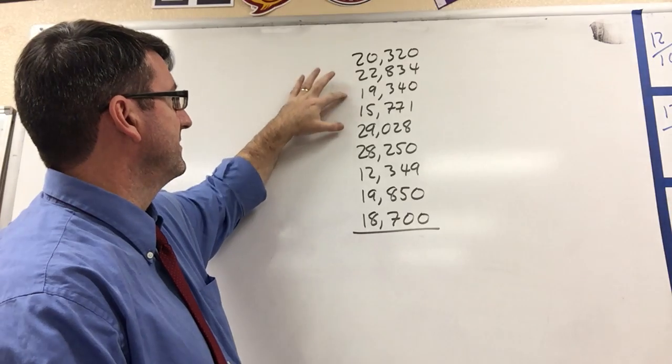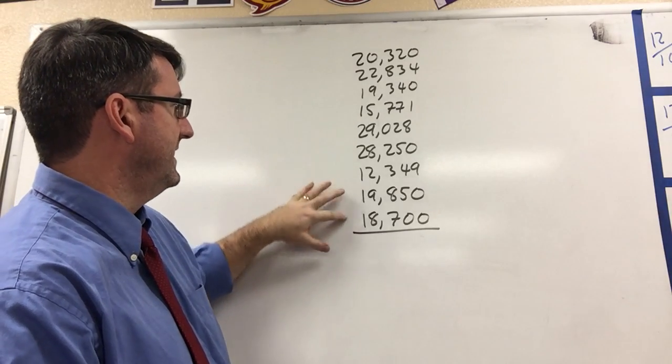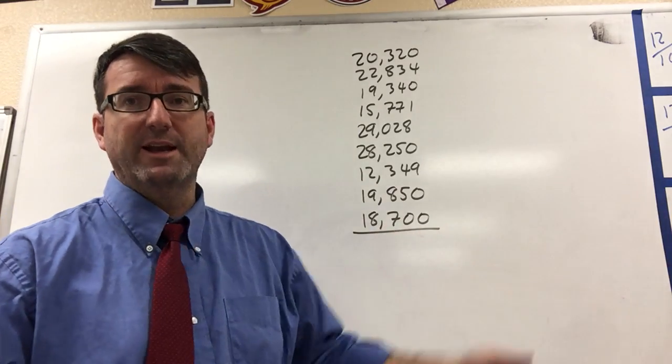So here we've got one, two, three, four, five, six, seven, eight, nine. So we're going to add these numbers up, divide by nine, and that'll give us our mean.